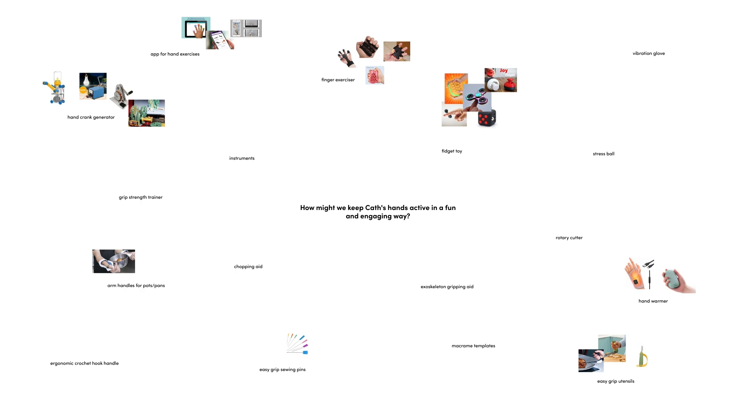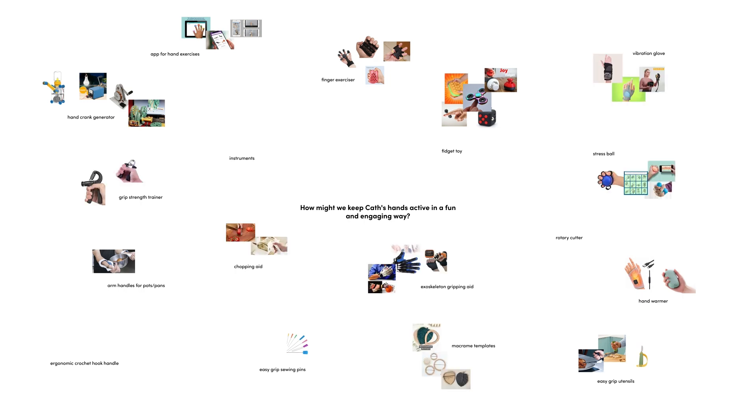The starting point for my ideation was a simple text brainstorm where I referred back to the things CAF had said about her life and disability to help inform my ideas. The aim was to go for quantity over quality at this point, and my ideas generally fell under two categories: supporting CAF's existing hobbies that involved hand movement, and devices that encourage hand activity through exercise. I followed this up with some online research of each area and dropped in images of existing products. This helped me understand what was already available on the market, and the visuals would also serve as a source of inspiration for my own unique concepts later down the line.